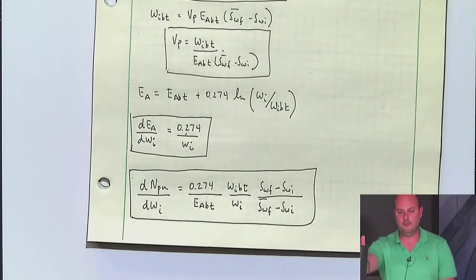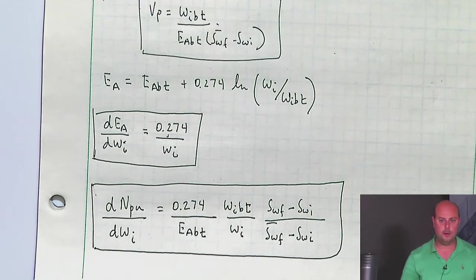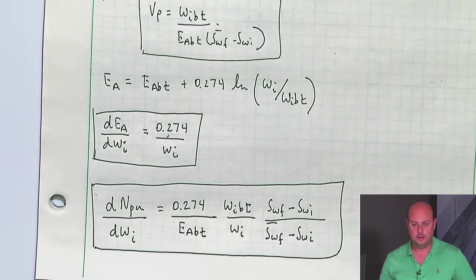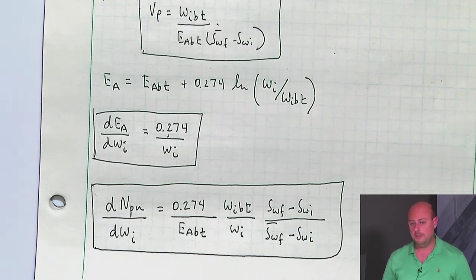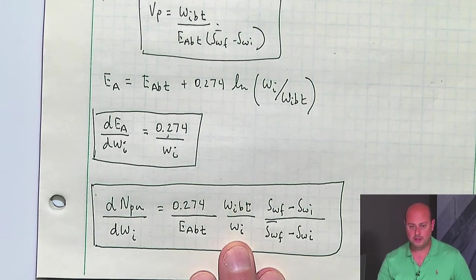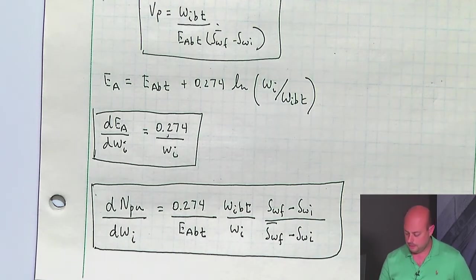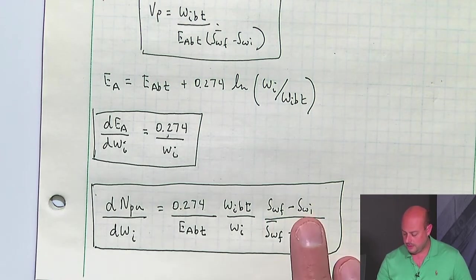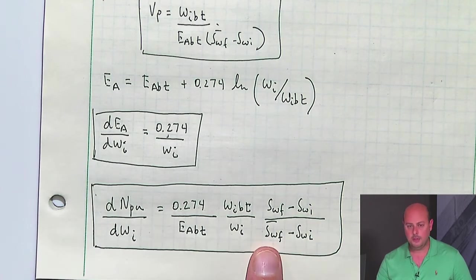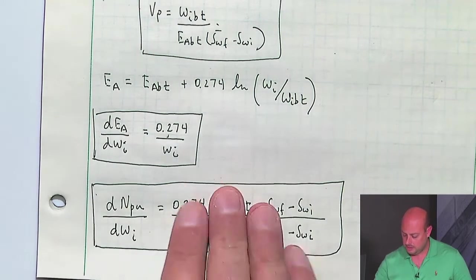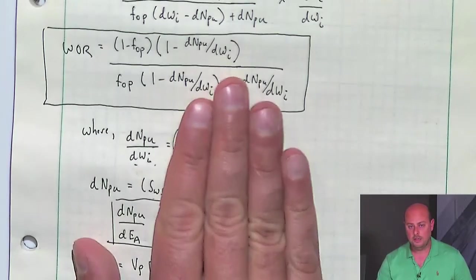You can calculate everything here. Presuming you know your fluid and reservoir properties, we had a correlation to compute aerial sweep efficiency at breakthrough dependent on the mobility ratio. We had an equation to calculate water injected at breakthrough. WI is how much water you've injected. SWF comes from the tangent of the fractional flow curves. SWI is the initial water saturation, and SWF bar is the average saturation behind the front. Now you can plug this directly into the water-oil ratio formula.